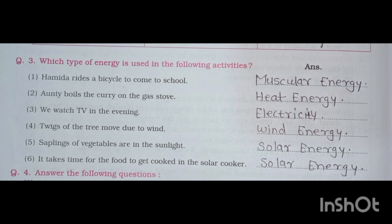Moving to Question No. 3: Which type of energy is used in the following activities? First: Hamida rides a bicycle to come to school — muscular energy. Second: Aunty boils the curry on the gas stove — heat energy. Third: we watch TV in the evening — electricity. Fourth: twigs of the tree move due to wind — wind energy.